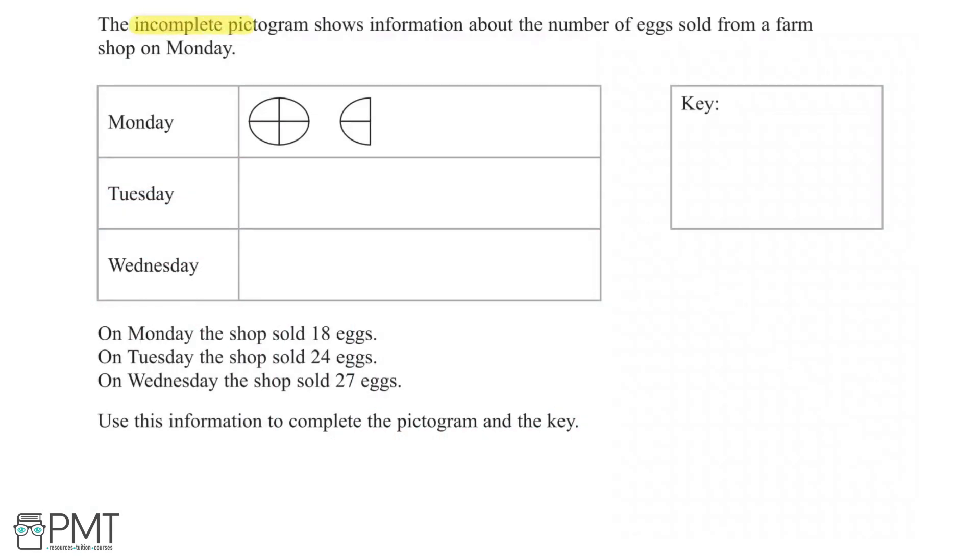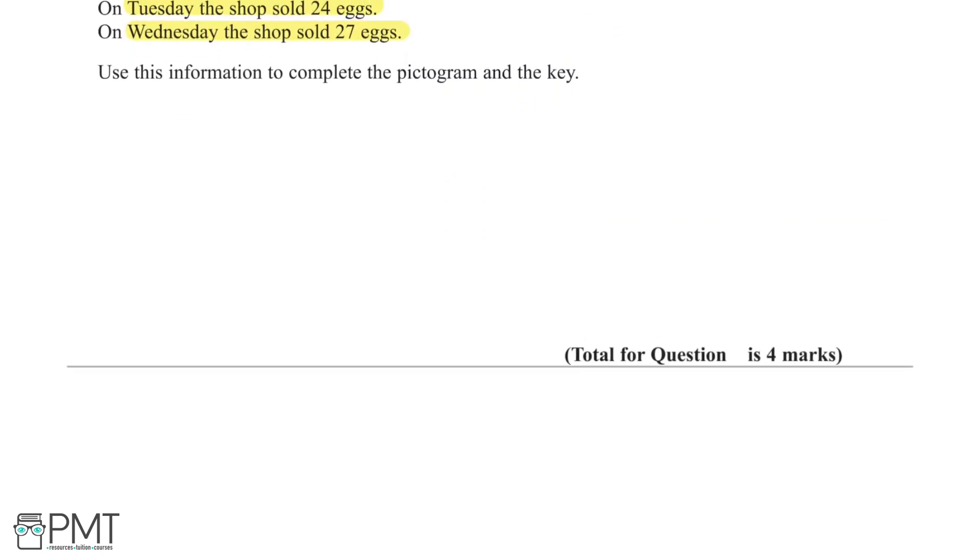We have been told the incomplete pictogram shows information about the number of eggs sold from a farm shop on Monday. We are told on Monday the shop sold 18 eggs, on Tuesday the shop sold 24 eggs, and on Wednesday the shop sold 27 eggs. We have been asked to use this information to complete the pictogram and the key, and this question is worth 4 marks.